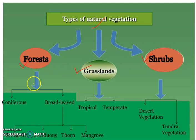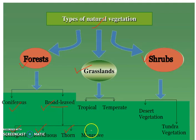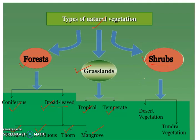Forests can be further classified as Conifers and Broadleaf. Broadleaf Forests are sub-divided as Evergreen, Deciduous, Thorn, and Mangroves. Grasslands can also be of two types: Tropical and Temperate, named after the region where they are found. Shrubs are medium-sized plants — they don't have a well-defined trunk, and they spread out near the ground only.